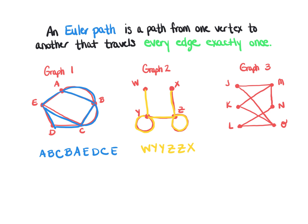I encourage you to pause the video and see if you can find an Euler path for graph three before watching me guide you through it. For graph three, I'll start at vertex O at the bottom. From O, travel to L, which leads to N, which leads to vertex M. From there, go to K, then back to O, to L, and to M. Every edge has been traveled exactly one time — that is an Euler path.